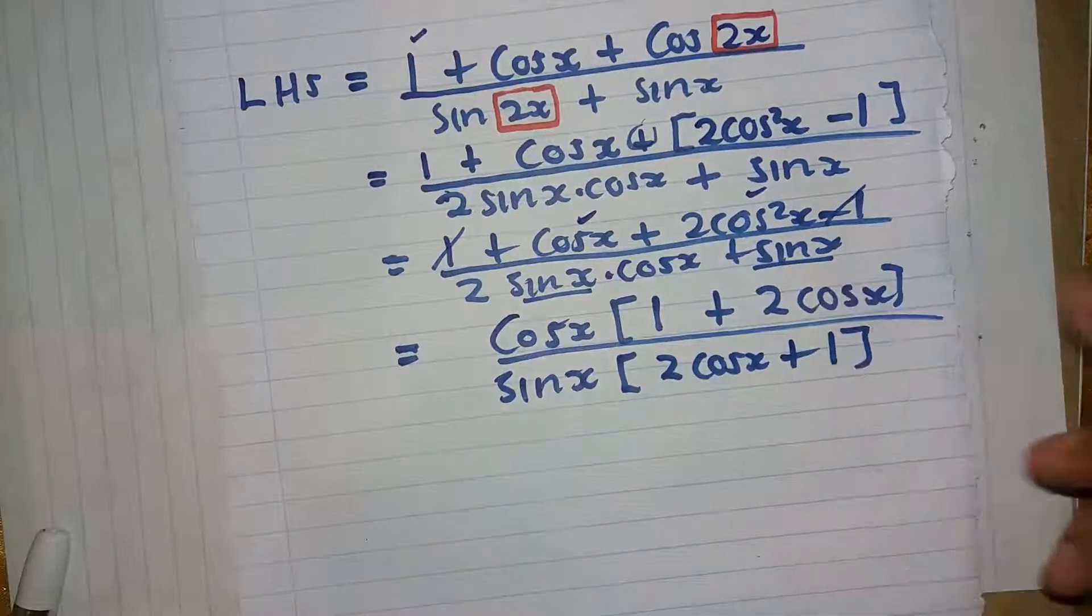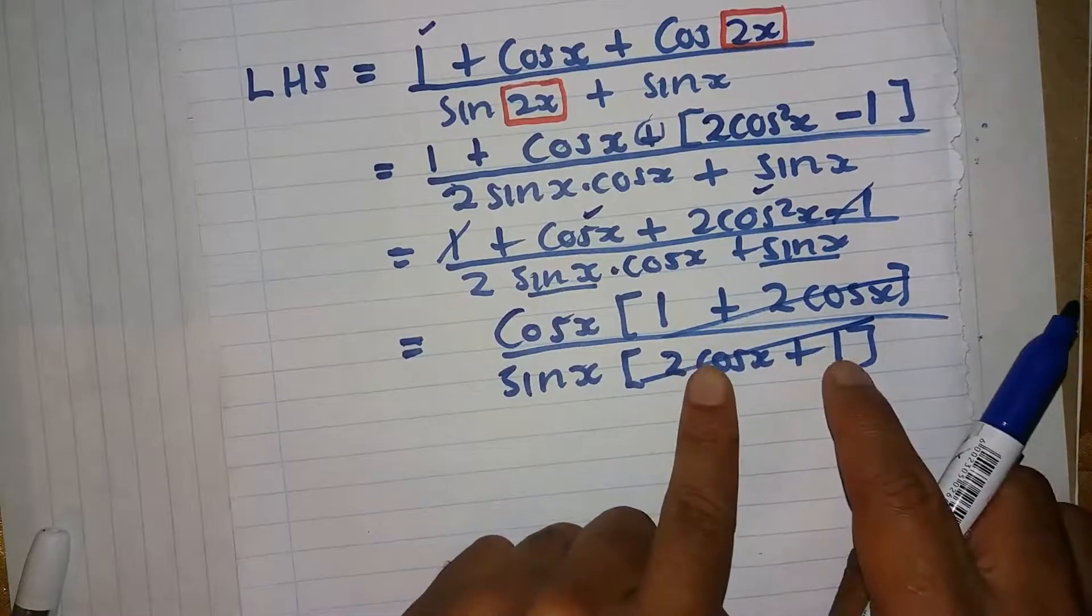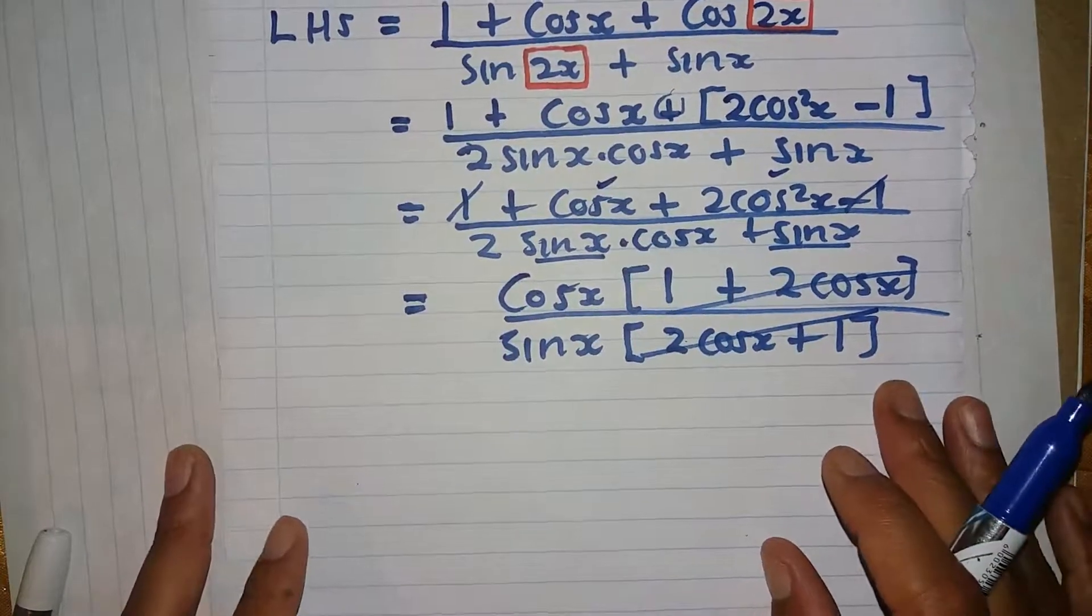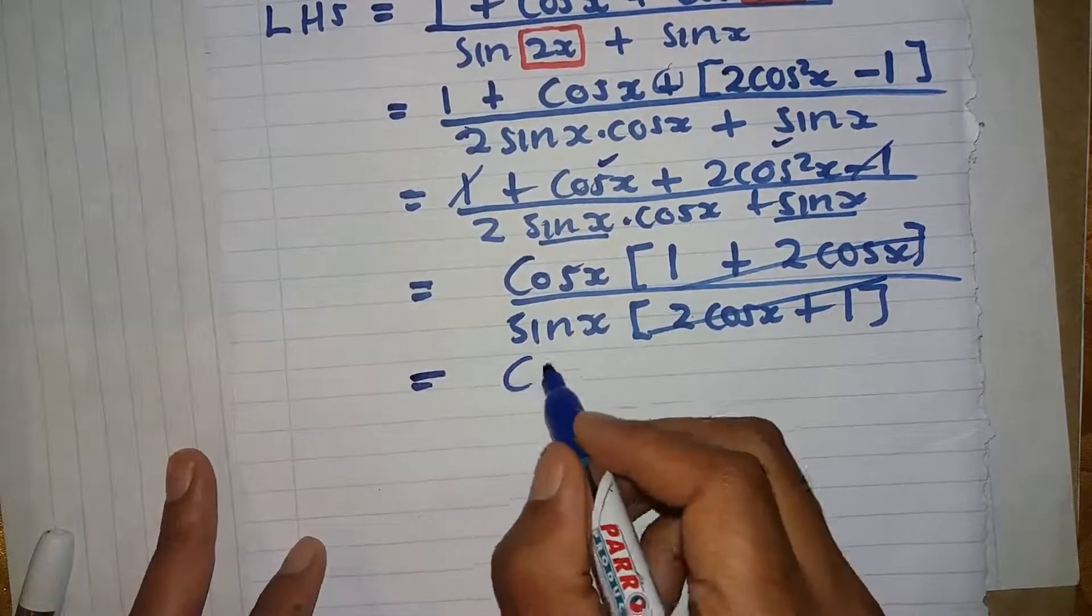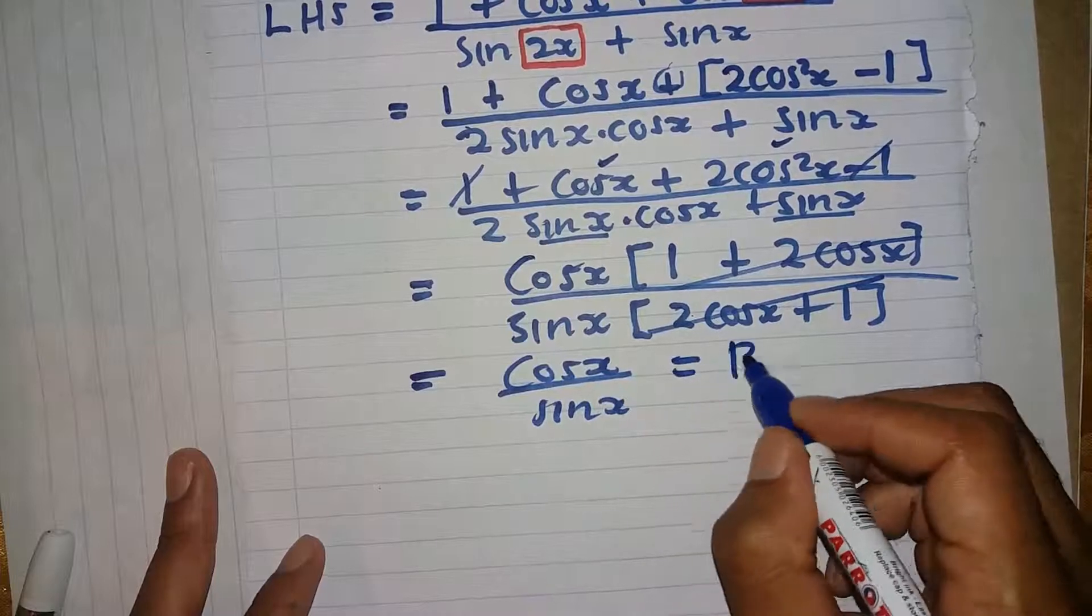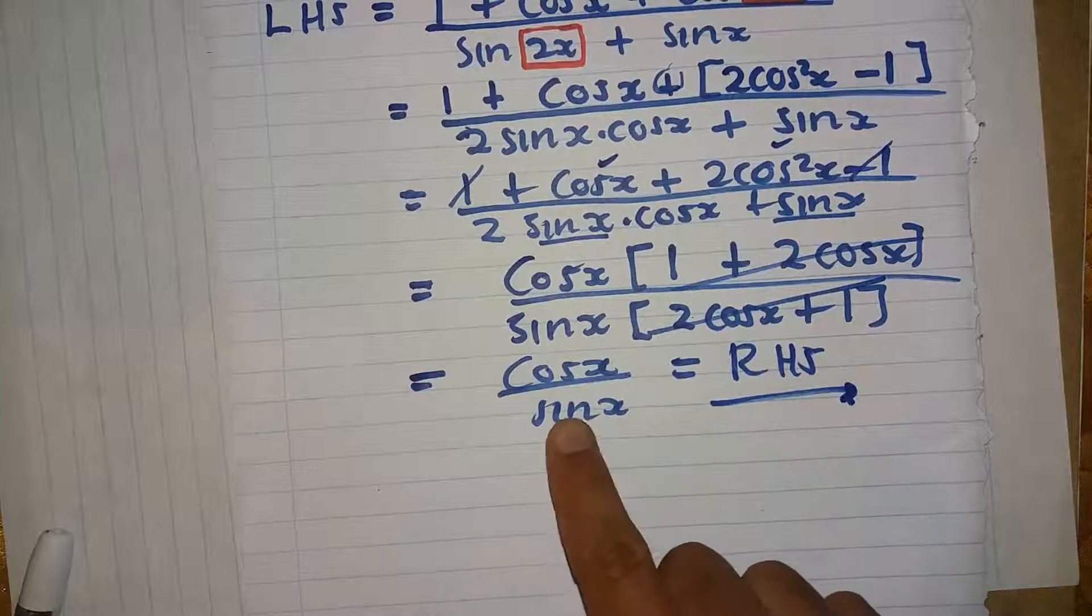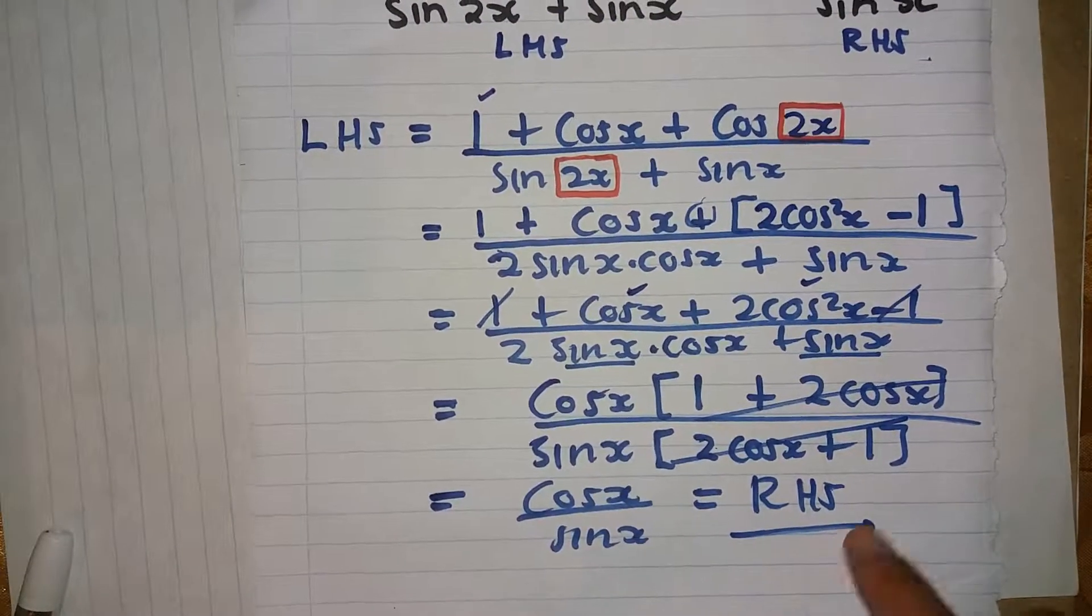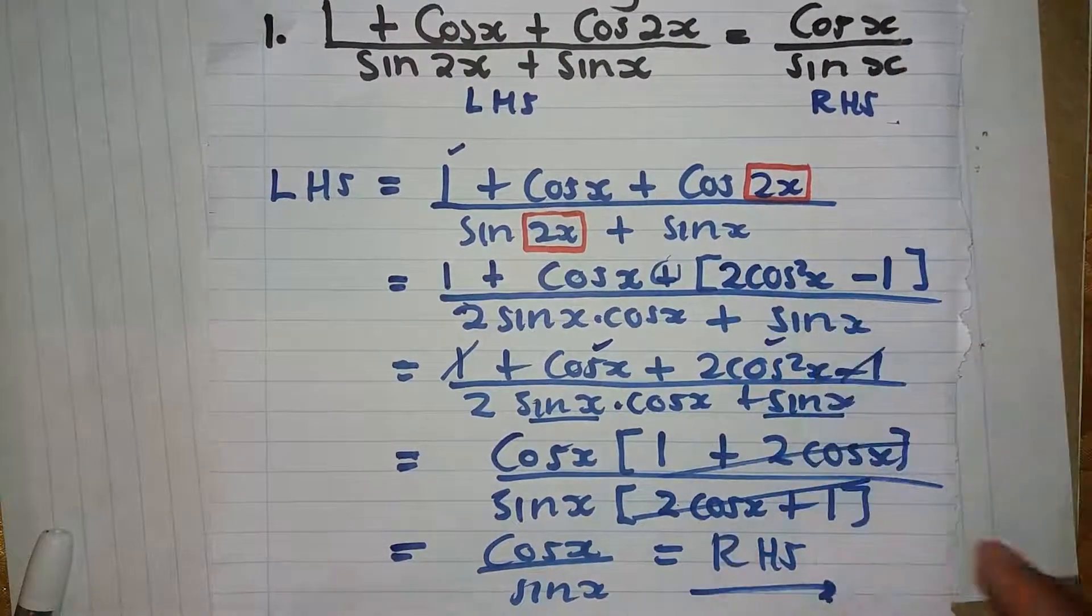So we have 2 cos x plus 1 on top. The bracket will cancel. Now you see we have cos x over sine x, which is equal to the right-hand side. So the simplified version equals the right-hand side. cos x over sine x equals the right-hand side.